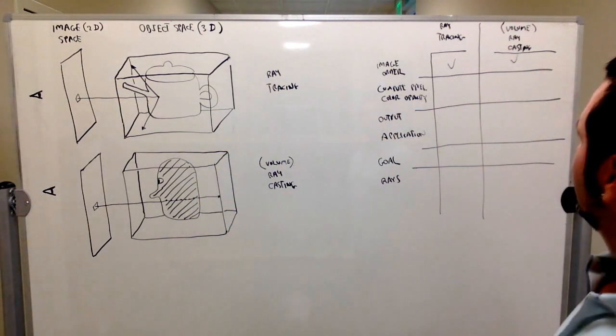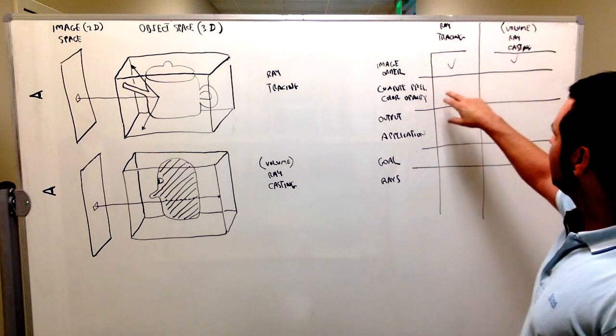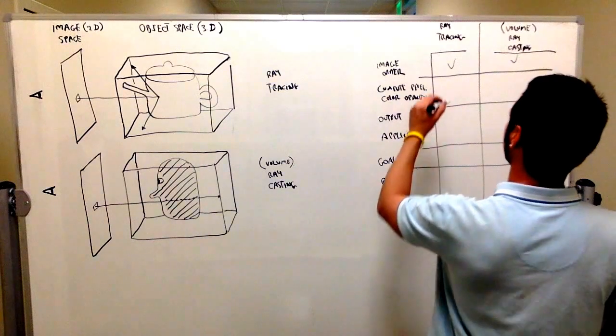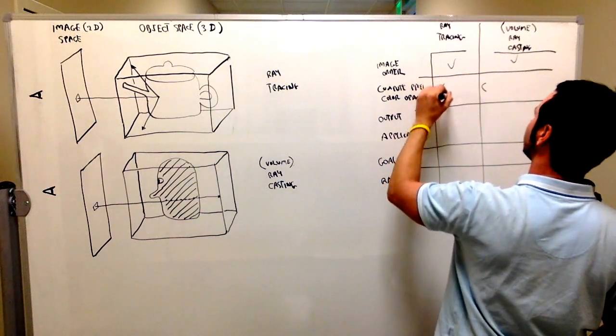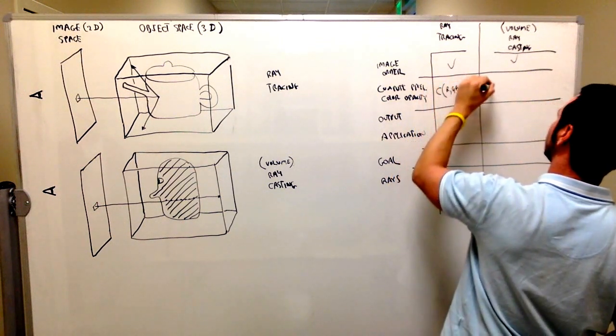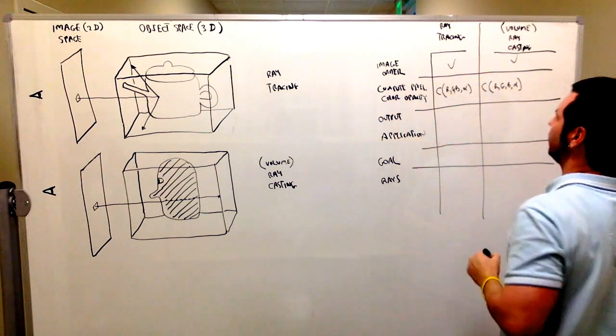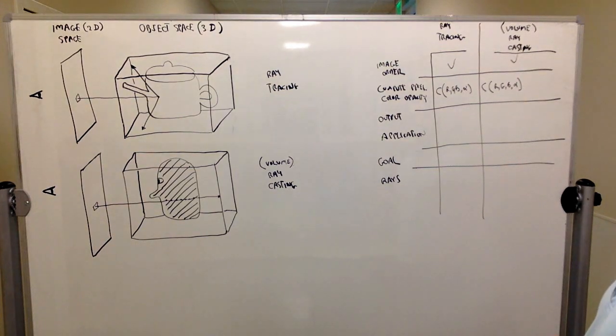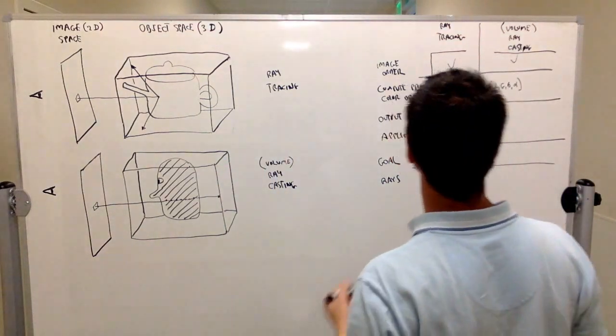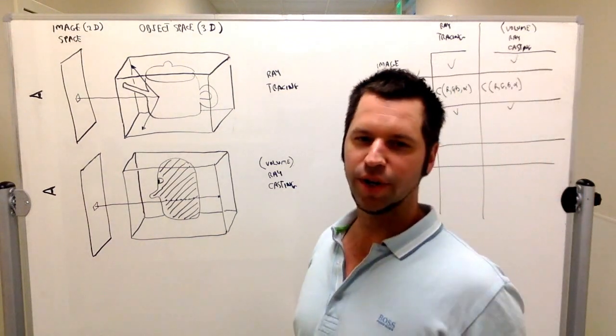What they have in common is they're both image order techniques. They both compute pixel colors and opacity—RGB alpha values. The output is the same: an image in both cases, just a collection of pixels with red, green, blue, and alpha values.